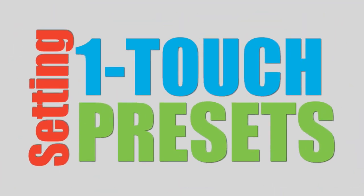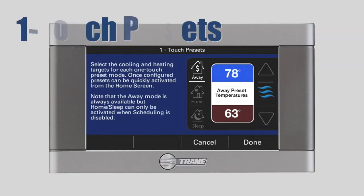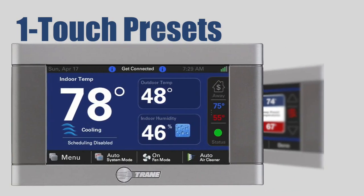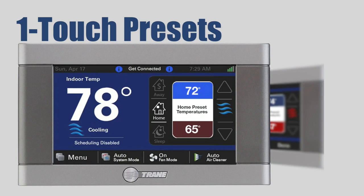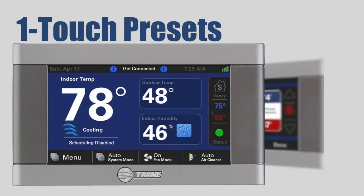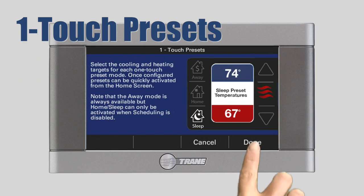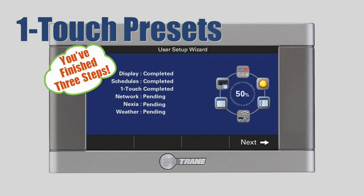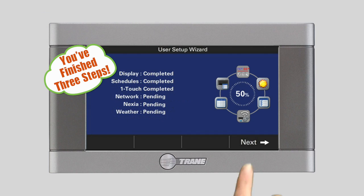Setting one-touch presets. If you selected to disable scheduling, you will see the one-touch presets screen. From here, you can program the heating and cooling target temperatures for when you are away, at home, and asleep. These settings can later be manually recalled from the home screen with just a couple of screen touches. Press Done when you have completed customizing your one-touch settings. The status screen now indicates that you have completed three of the six steps in the setup wizard. To continue, press Next.